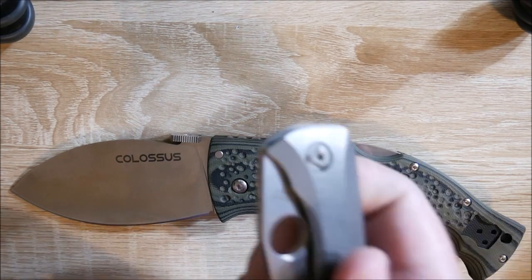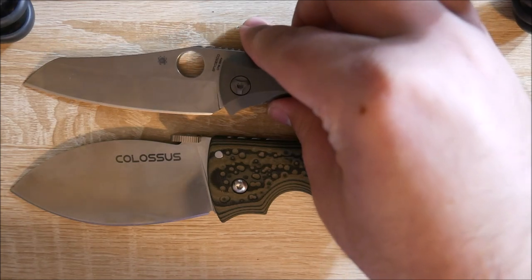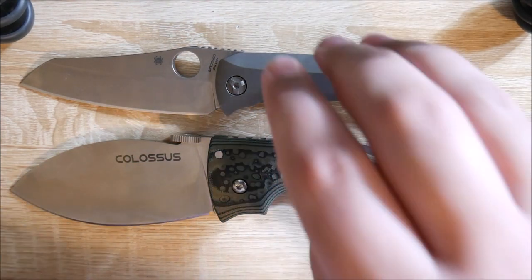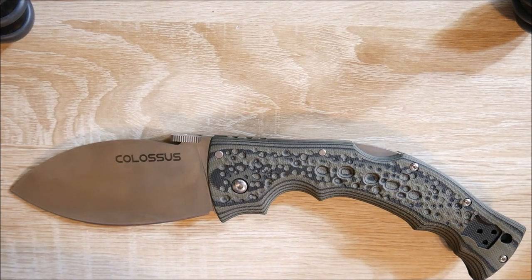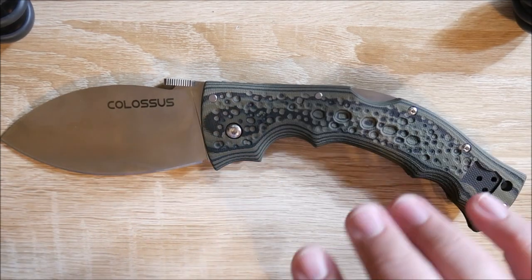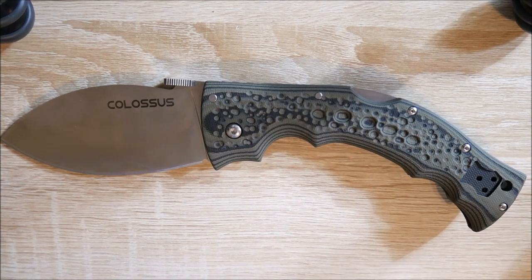The closest thing I have lengthwise is the Spyderco Paisan. And even it is not nearly as long as the Colossus is. This thing is freaking huge. It's very, very big. So, now that the size comparison is out of the way, let's go ahead and go into what I like about this knife.